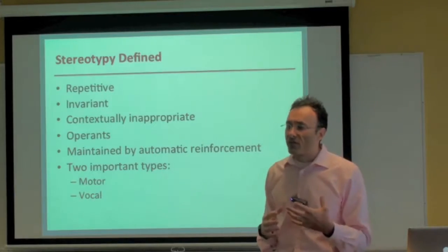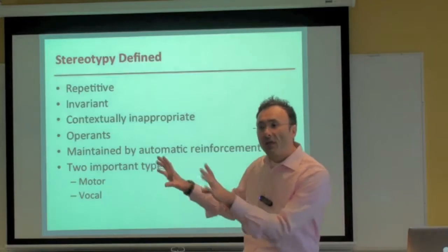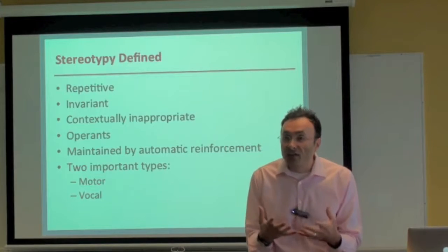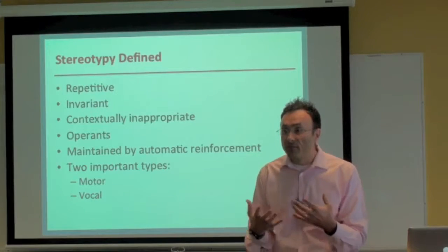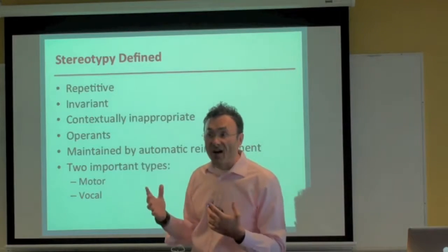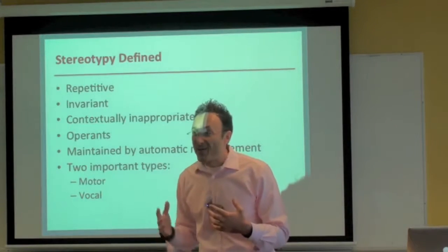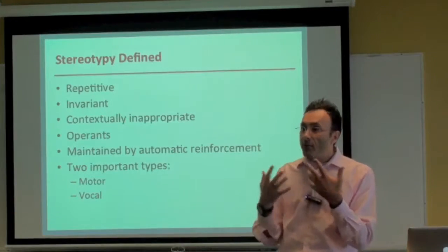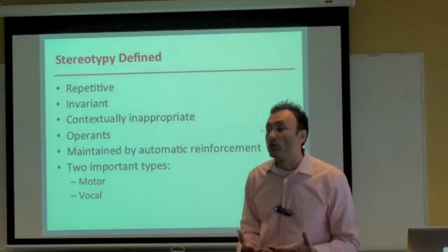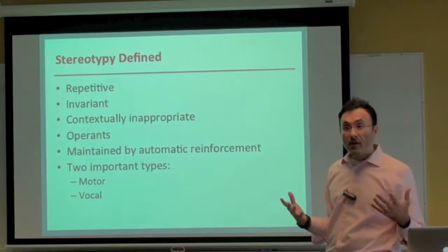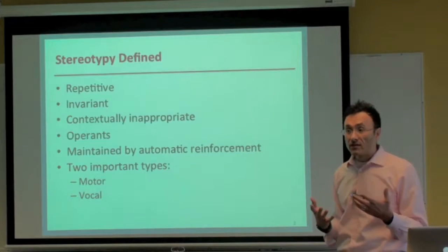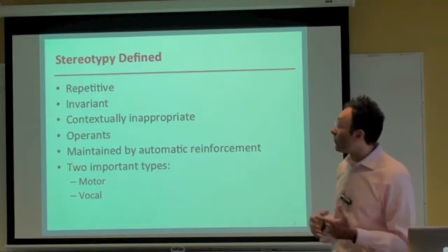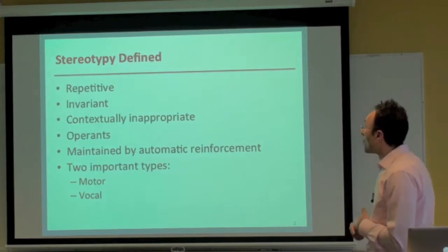Automatic reinforcement refers to the fact that another person need not be involved. It's not that I do a behavior and somebody else gives me a high five or access to food. Rather, I produce my own reinforcement. For many people who engage in stereotypy, the behavior and the reinforcer are one.